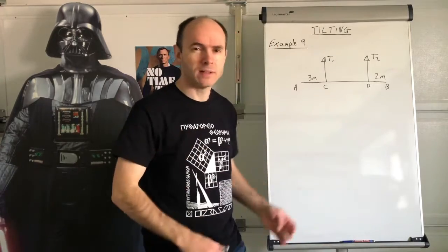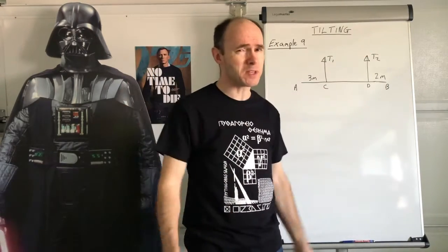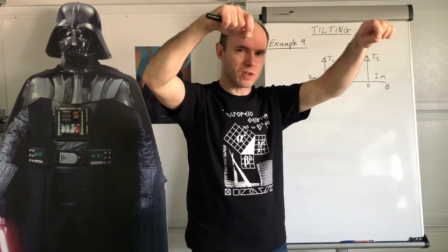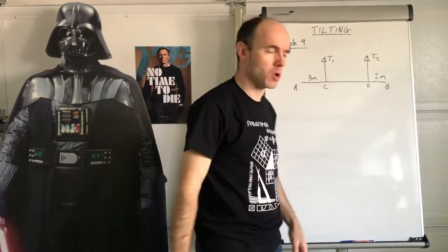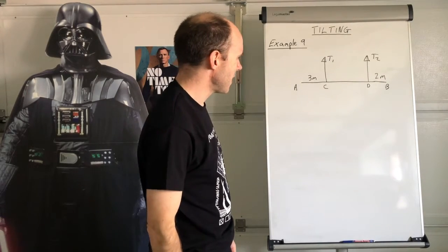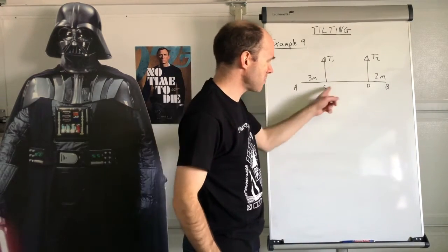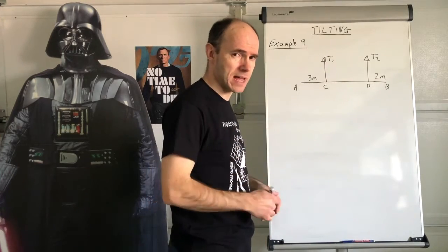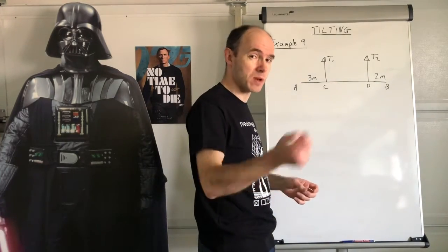So imagine just holding something up with strings. There's tension in the strings. That's what's holding it up. Not normal reactions. Do you know why the center of mass would be somewhere in there? Otherwise it's going to tilt. It's not going to balance out. And I'll further demonstrate that when I read the rest of the question.